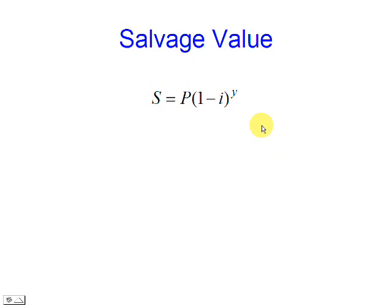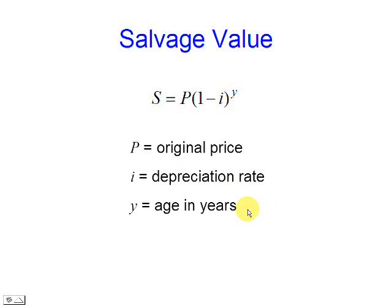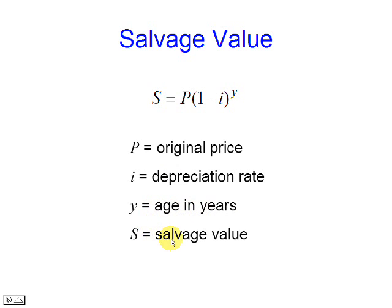This is the formula to be used. P is the original price. I is the depreciation rate. Y is the age in years, and this is the salvage value to be calculated.